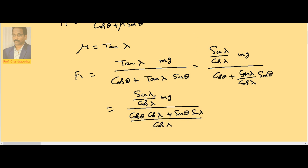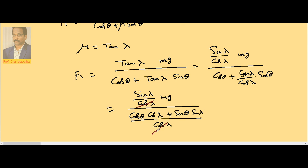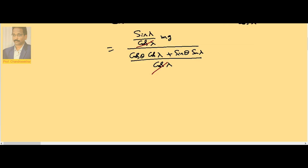Cos lambda gets cancelled first. Therefore, the equation is Mg into sin lambda divided by cos of theta minus lambda.